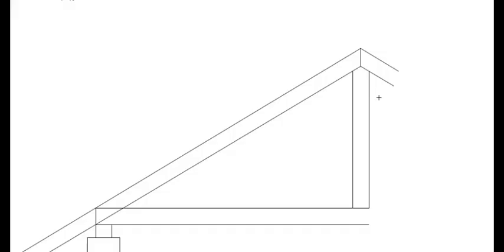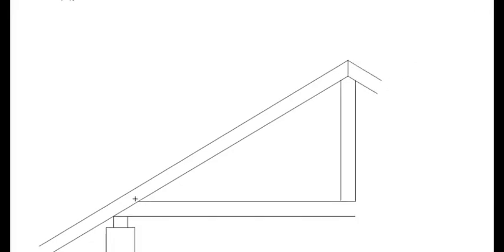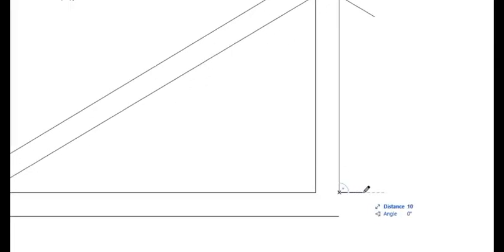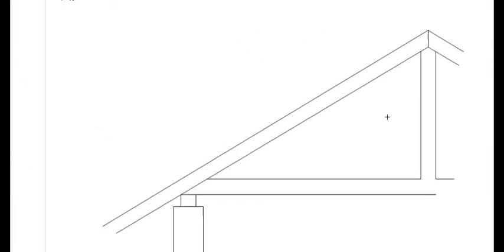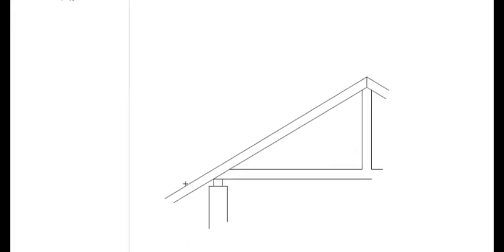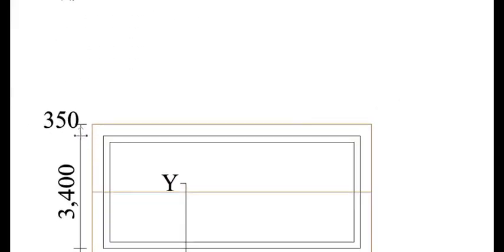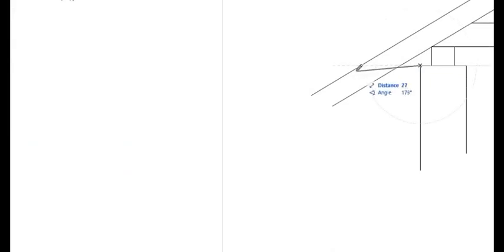We shall erase these parts. This is our tie beam and this is our rafter. Let me just extend this a little bit because this element is continuous in nature. Now we have to measure the eaves — as you can see from the plan, the roof has an eave of 350 millimeters. So from this point we are going to draw a horizontal line measuring 35 millimeters long going towards the left side.